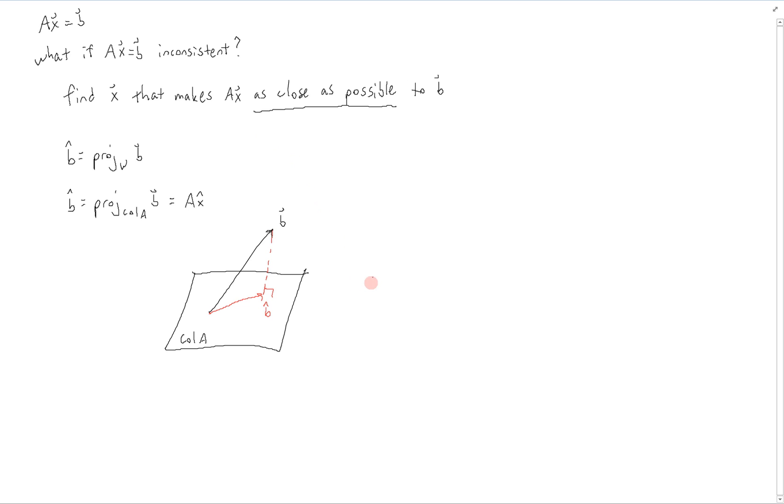What we know about this b hat is that, first of all, b hat is the closest point in the column space of a to b. We also know that b hat is in the column space of a since we projected it into the column space of a. So the equation ax equals b hat is consistent. And based on this, we also know that there is a solution x hat such that ax hat equals b hat.